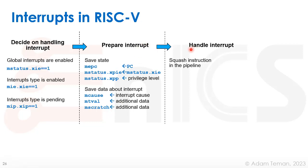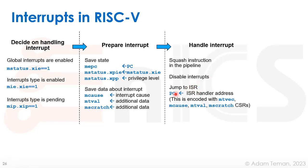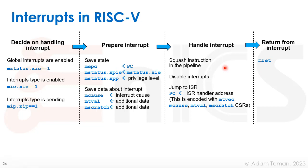Now we handle the interrupt. First, we squash instructions in the pipeline that haven't passed this point, since they won't execute correctly as we're jumping to a different procedure. Then we disable interrupts to avoid interference from lower-priority sources. We jump to the ISR by setting the program counter to the handler address encoded in mtvec, mcause, mtval, and mscratch — depending on whether we're using vectored or single-entry interrupts. Finally, we return from the interrupt with the mret instruction, restoring the previous state. This complex process ultimately supports the higher-level abstraction of interrupt handling we described earlier.